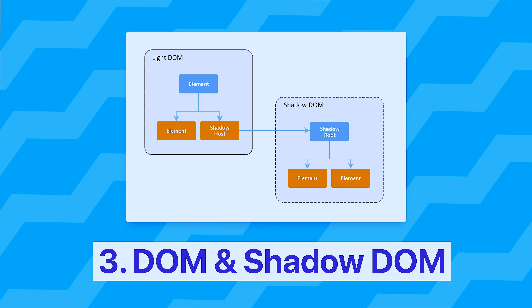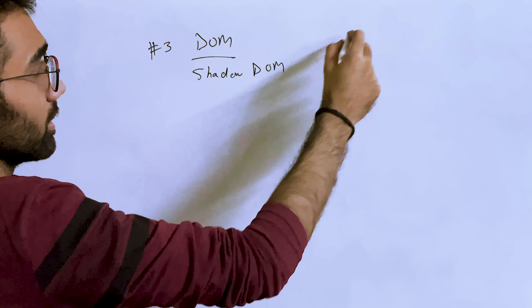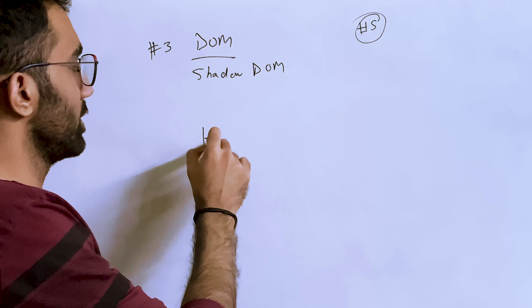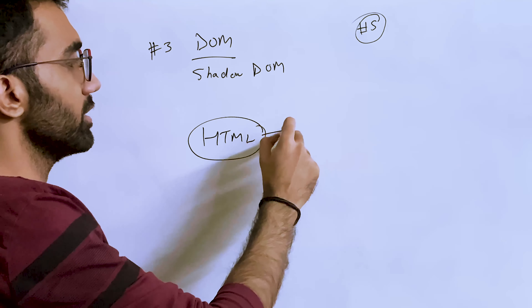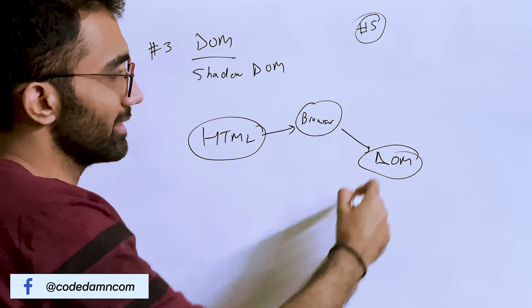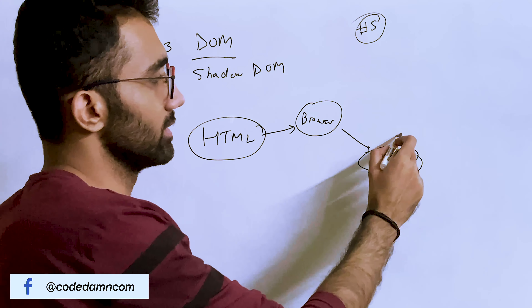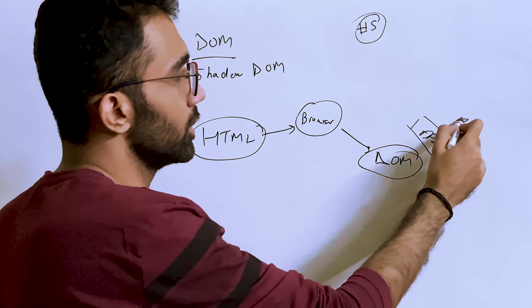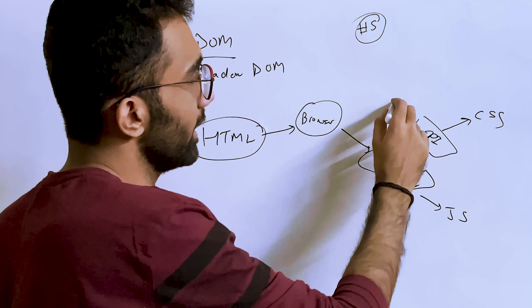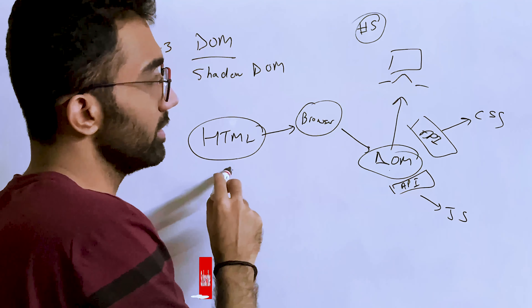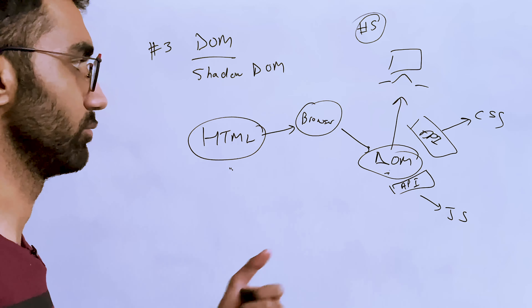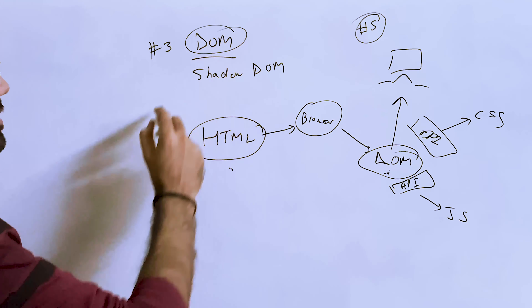My third tip is around the Document Object Model and the Shadow DOM, which is becoming very popular. The DOM and Shadow DOM are concepts constructed from your HTML document — the browser takes your HTML and constructs a DOM, which is essentially an API surface exposed to CSS and to JavaScript. The DOM is the actual thing the user sees on the page, not the raw HTML — it's a tree of all your nodes, tags, and values.